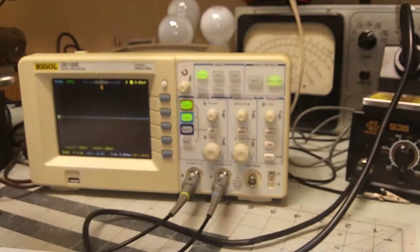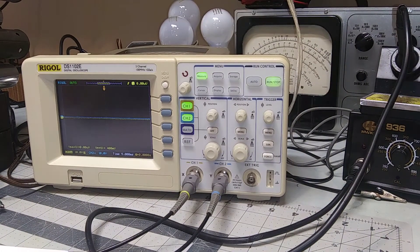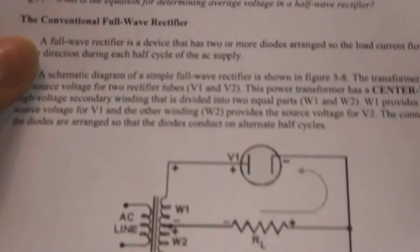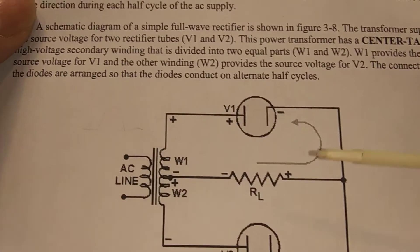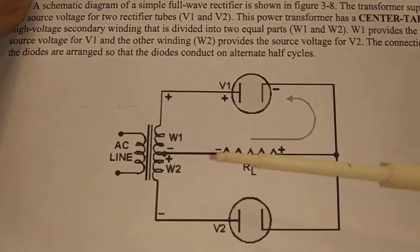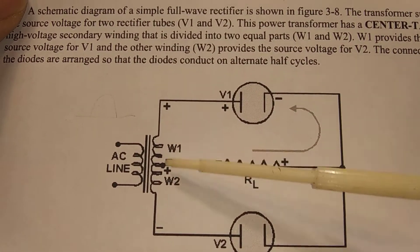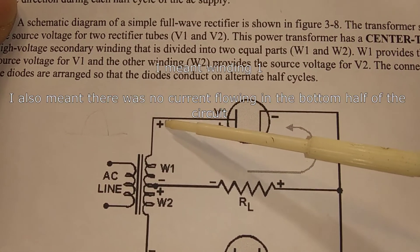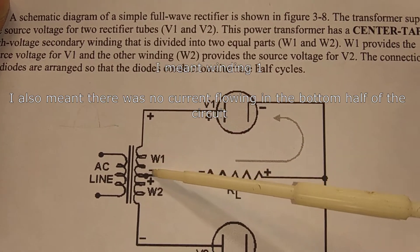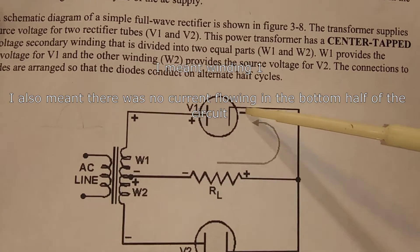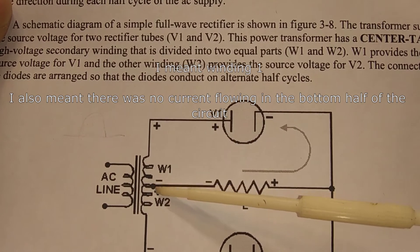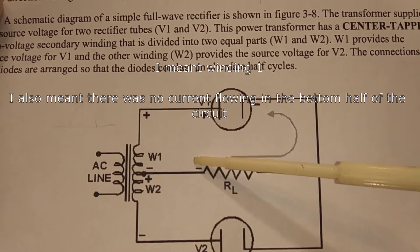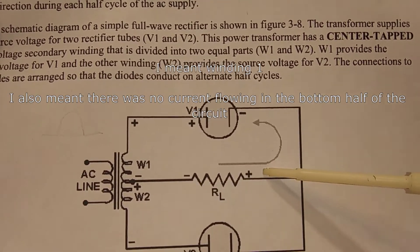So let's look at a full wave rectifier. Now we're on page 3-7. And again, you've got your AC source over here. You've got winding one and winding two. And right now winding two is supplying a positive going wave. And the current flows this way through the tube and back to the coil. And down here, there's no current flowing whatsoever. Notice that the current flow is from minus to plus in this illustration.